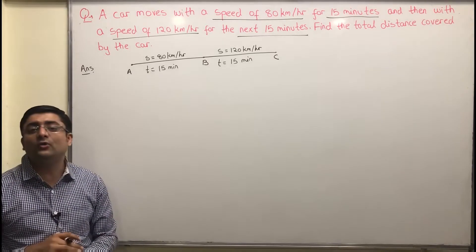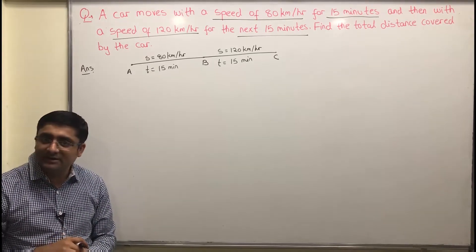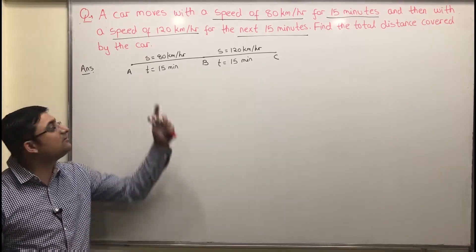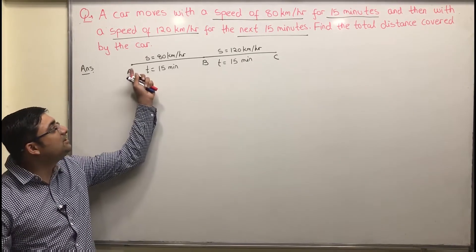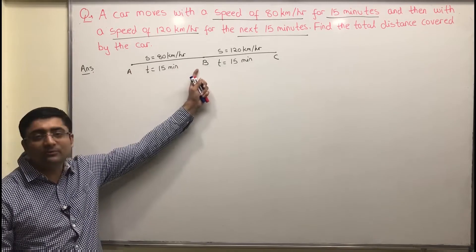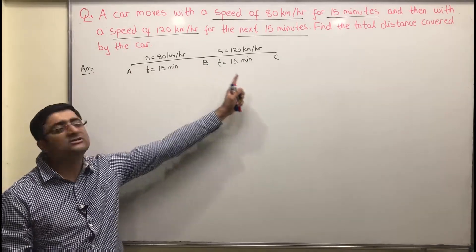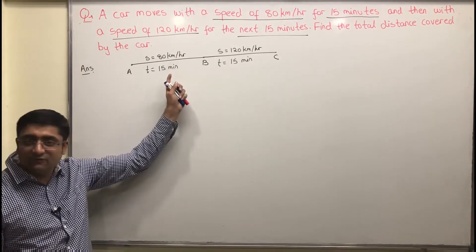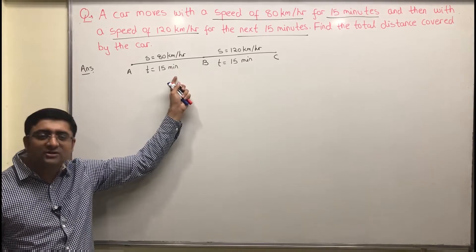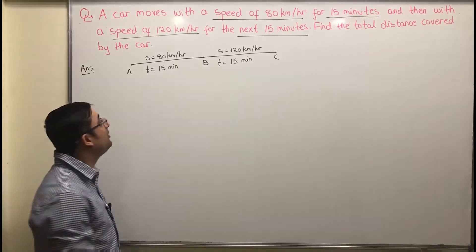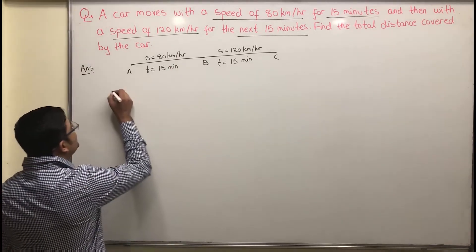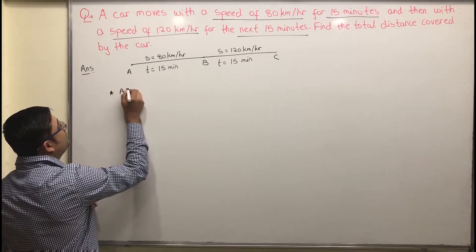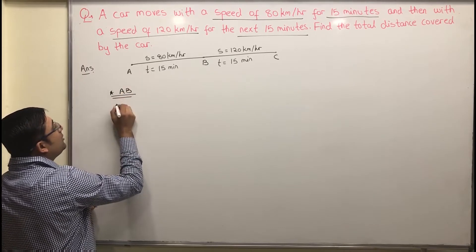What we have to find is the total distance covered by the car, which is the distance from A to B plus the distance from B to C. I've already drawn the figure and written the information. Now we'll apply the formula, starting with segment AB.